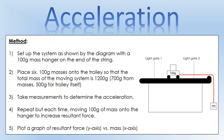For the actual experiment, we set up the system with a 100 gram mass hanger on the end of the string. We place six 100 gram masses onto the trolley so the total mass of the moving system is 1200 grams — 700 grams from the hanger and masses, and 500 grams for the trolley itself. We take measurements to determine the acceleration, then repeat the process each time moving 100 grams from the trolley onto the hanger, keeping total mass the same. Finally, we plot a resultant force versus acceleration graph.